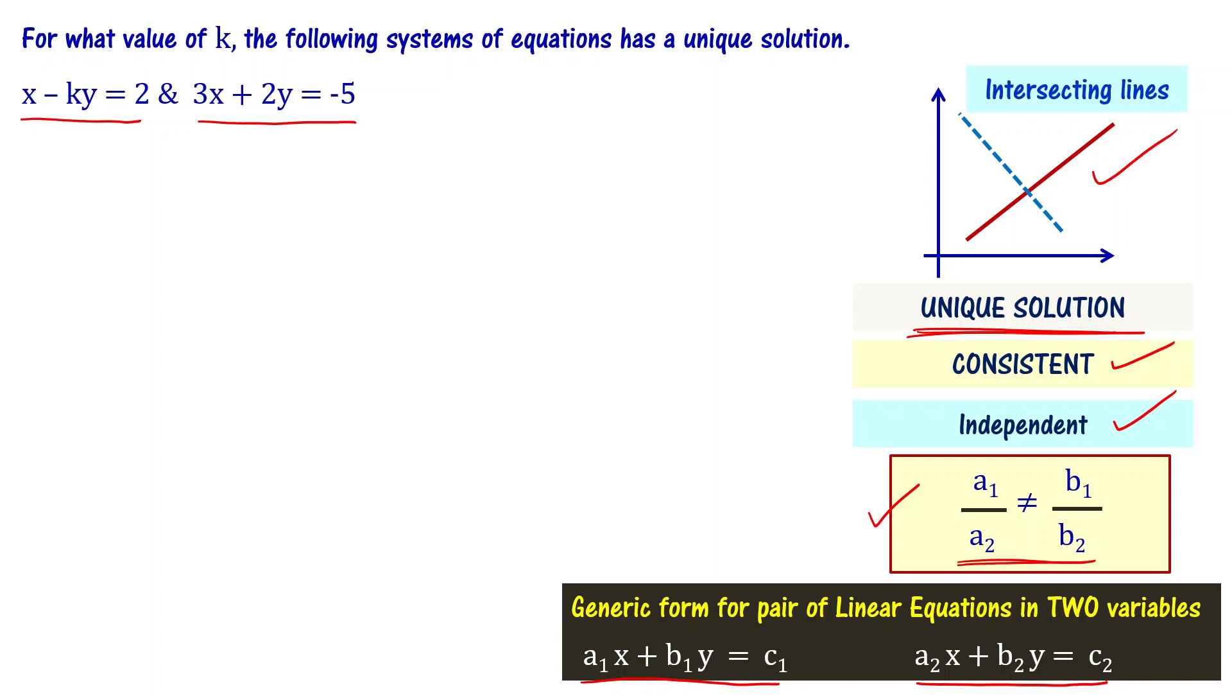Let's compare the given equations with the generic form for a pair of linear equations in two variables. In x minus ky equal to 2, the first equation: a1 is 1, b1 is minus k, and c1 is 2. Now let's look at the second equation 3x plus 2y equal to minus 5 and compare it: a2 is 3, b2 is 2, and c2 is minus 5.